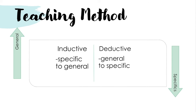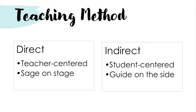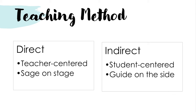The second comparison is between direct and indirect methods of teaching. When you say direct method, this is teacher-centered — you think of the teacher as the sage on stage, meaning the expert. The teacher drives the learning, talks a lot inside the classroom, and students learn from the teacher. When you say indirect teaching method, it is student-centered — the teacher becomes just the guide on the side, a facilitator of learning. The student discovers concepts on his or her own; the teacher is just there to facilitate. Direct teaching is teacher-centered; indirect teaching is student-centered.